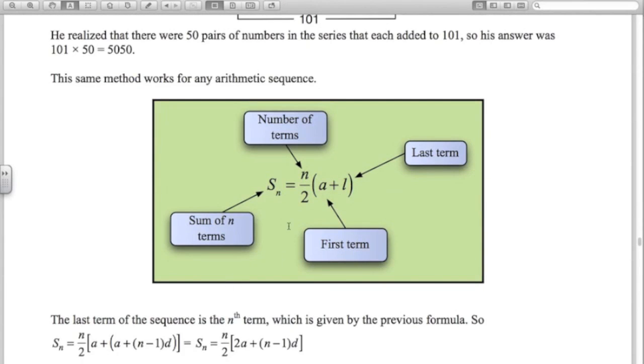The sum of n terms: n over 2 times (a plus l). In Gauss's case, n was 100, so there's 50 pairs. And a plus l, 1 plus 100, would be 101. 50 lots of 101. This works for any one of these, even if you don't have exactly an even number of terms.